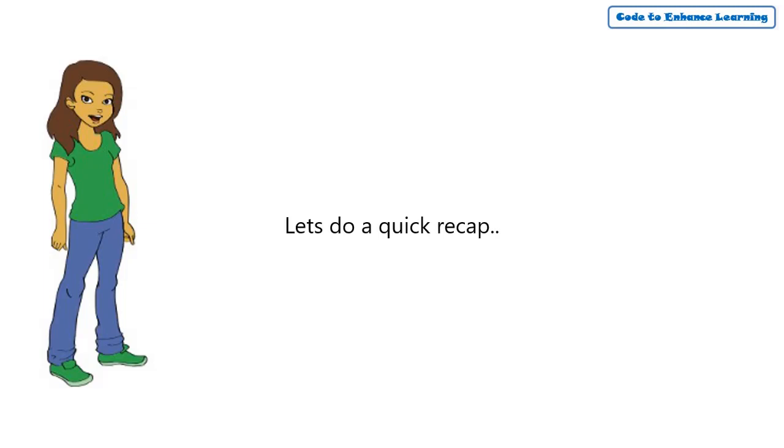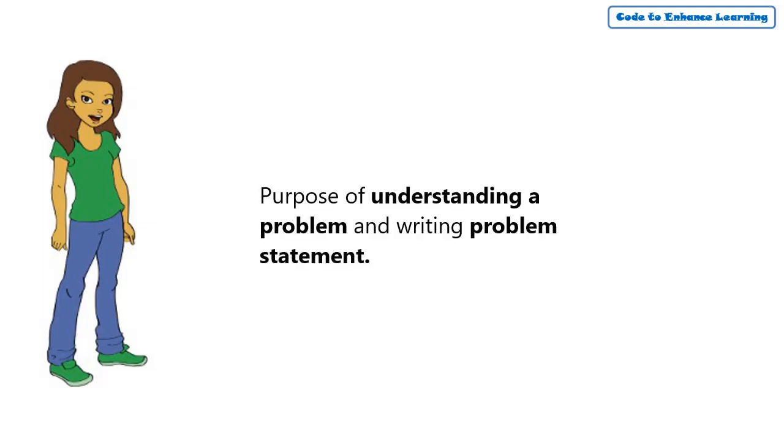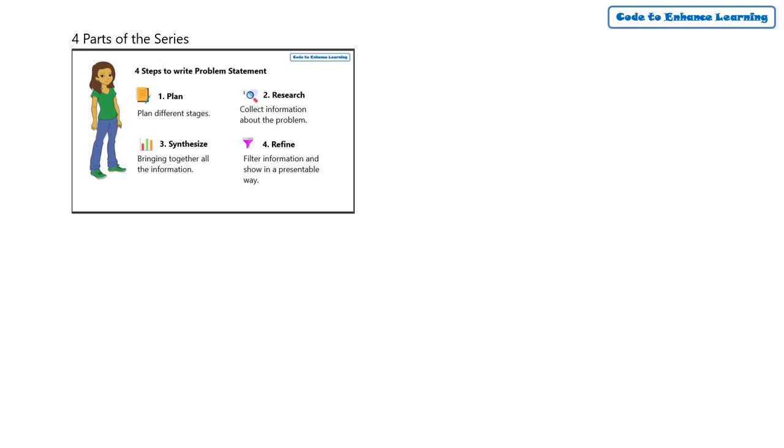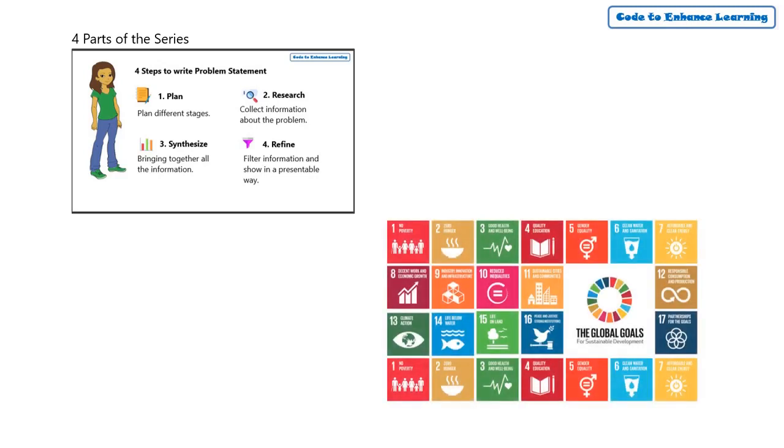Let's do a quick recap of what we did. We initially discussed the purpose of understanding the problem and writing a problem statement. We learnt about the four steps that is plan, research, synthesize and refine to write the problem statement. Also, we ensured that the problem selected falls under UN sustainability goals.